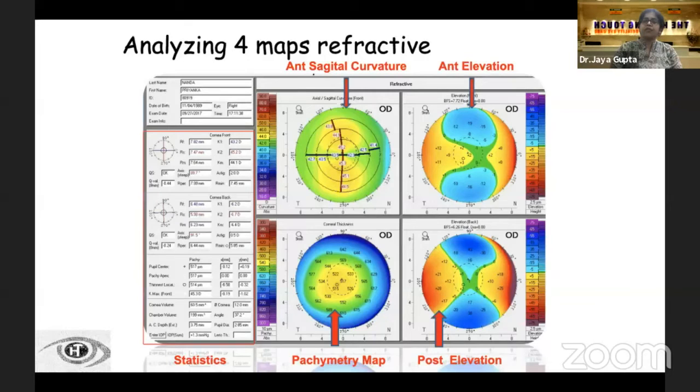This is a refractive quadmap printout in which we see different areas. We'll be discussing each of them in a little detail.